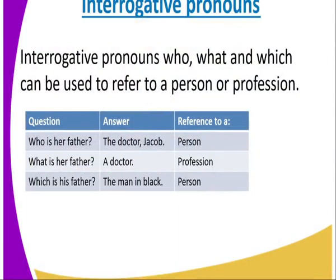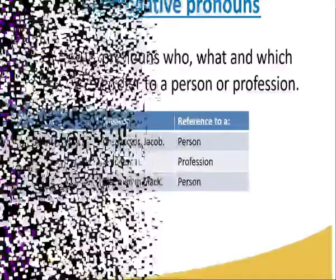Interrogative pronouns who, what, and which can also be used to refer to personal profession. For example: 'Who is a father?' — the answer is Dr. Jacob; reference is to a person. 'What is a father?' — a doctor; reference has been made to a profession. 'Which is his father?' — the man in black; therefore, a reference has been made to a person.